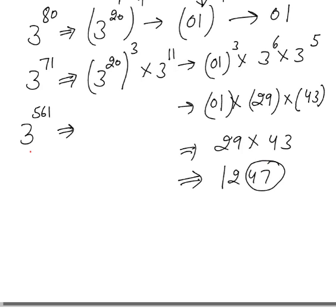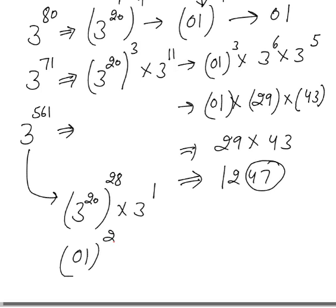For 3^561, we break it as (3^20)^28 × 3^1. This becomes 01^28 × 3. Since 01 raised to any power is 01, we get 01 × 3 = 03. So the last two digits of 3^561 are 03.